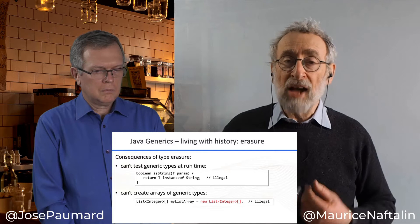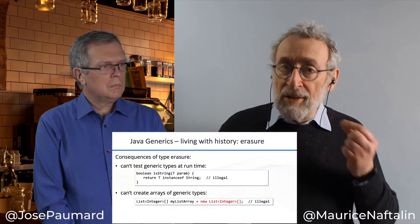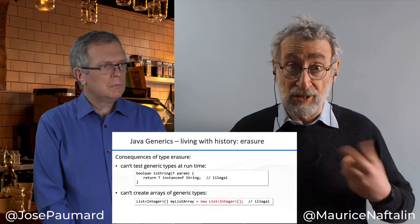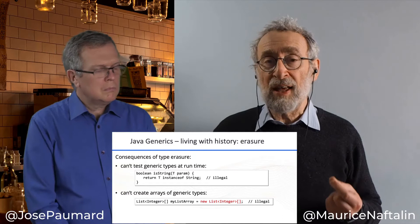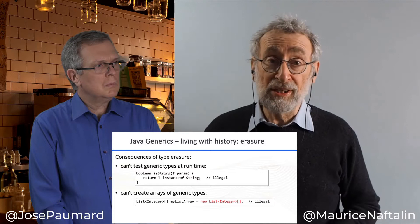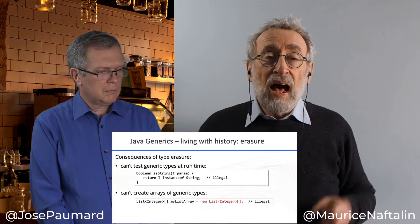An even more irritating drawback is that you can't create arrays of generic types. The typing scheme for arrays is not really compatible with the typing scheme for generics. Arrays, unlike generics, know their component type at runtime — it's baked into the definition of the array. So trying to make an array of a type which can't exist at runtime, like List of Integer, is illegal. The type is perfectly well defined on the left-hand side, but you can't actually create an instance of it.